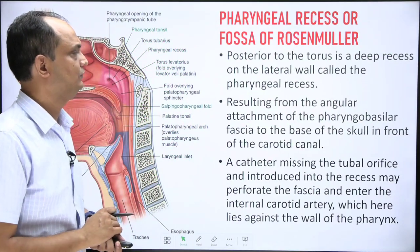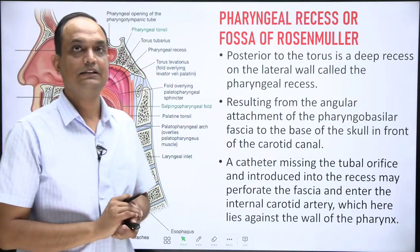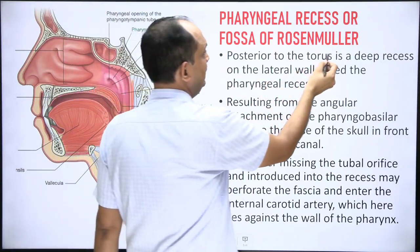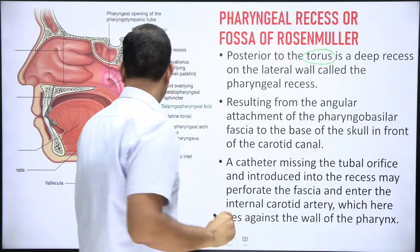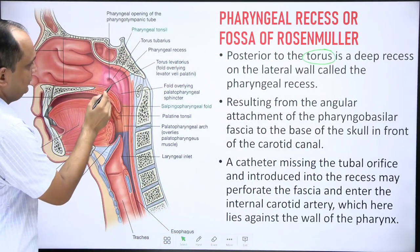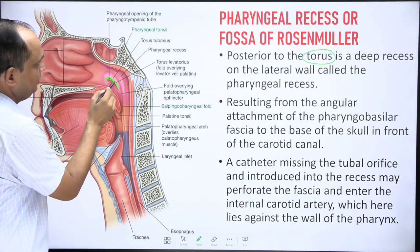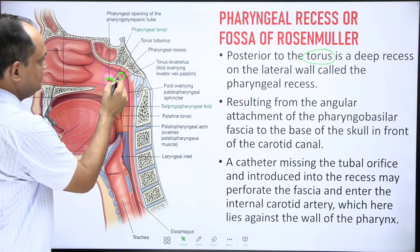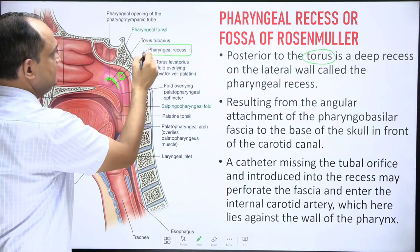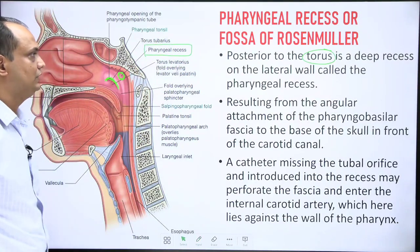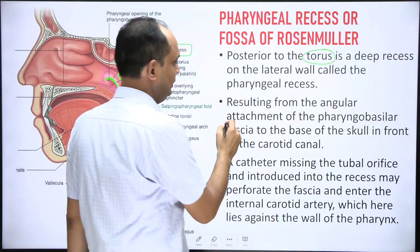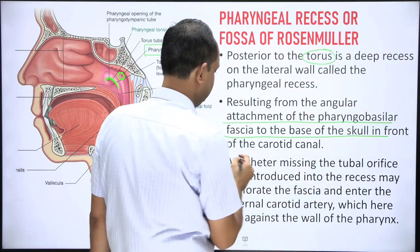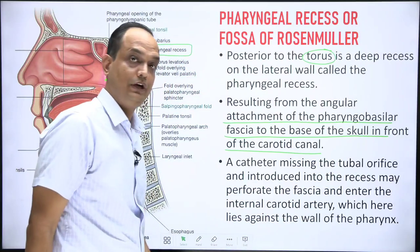The fossa of Rosenmuller, also known as the pharyngeal recess, is another important feature of the lateral wall of the nasopharynx. It lies posterior to the tubal elevation. This recess results from the angular attachment of the pharyngobasilar fascia to the base of the skull in front of the carotid canal.